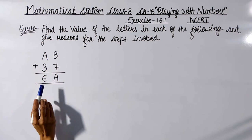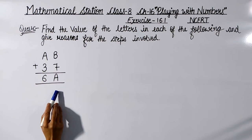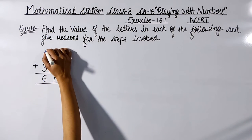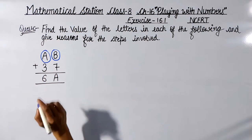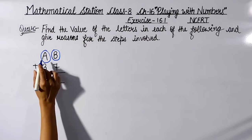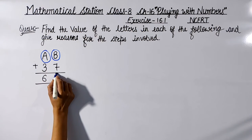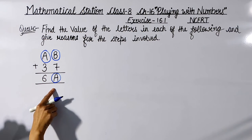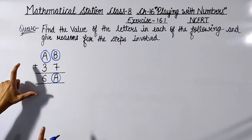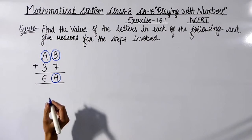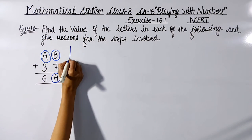The question is AB plus 37 is equal to 6A. In this question there is an addition operation and there are two letters, A and B. We have to find the value of A and B. The value of A will be the same in both places where it appears.